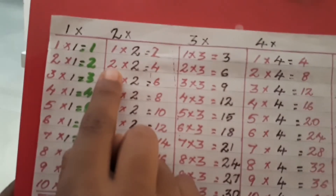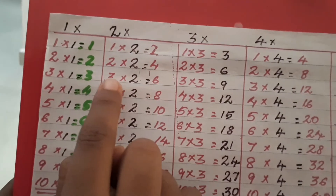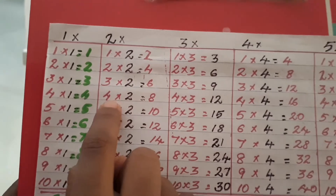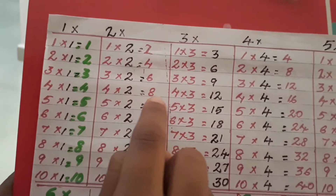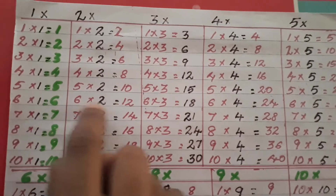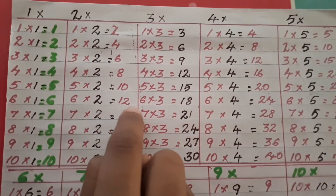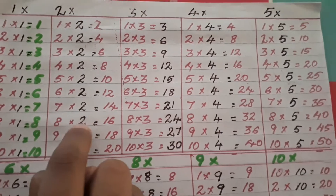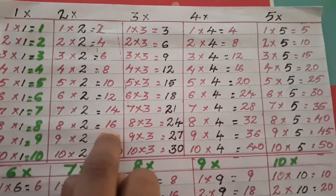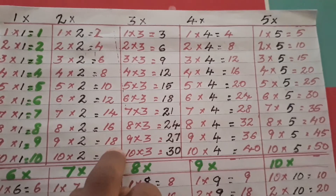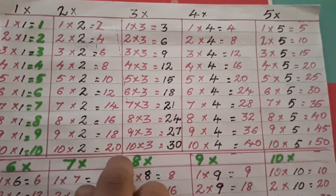1 two is 2. 2 twos are 4. 3 twos are 6. 4 twos are 8. 5 twos are 10. 6 twos are 12. 7 twos are 14. 8 twos are 16. 9 twos are 18. 10 twos are 20.